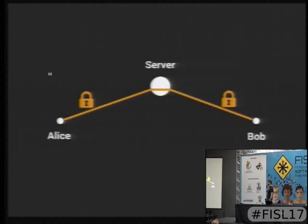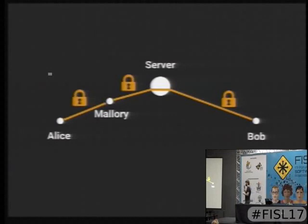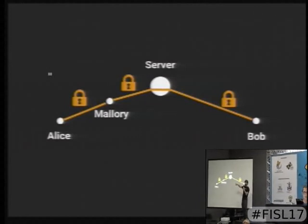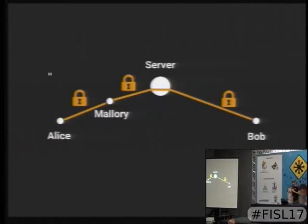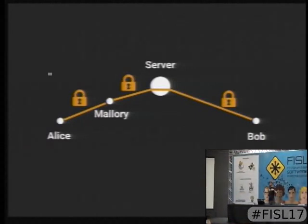There is one problem with this: so-called man-in-the-middle attacks. There's a Mallory in the middle. It's all end-to-end encrypted, but the people are not sure what the ends are. For Alice, she thinks it's Bob, but actually it's Mallory. She has a crypto session with Mallory, and Mallory has a crypto session with Bob — both think they are talking only to each other. This is a problem with PGP email encryption; you usually address it by verifying fingerprints and signing each other's keys, which is very complicated and not nice.